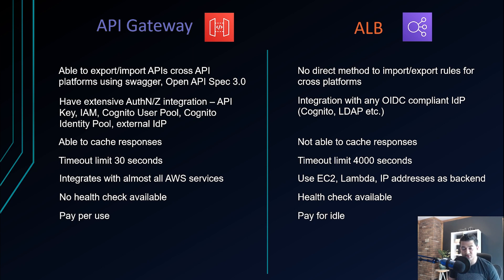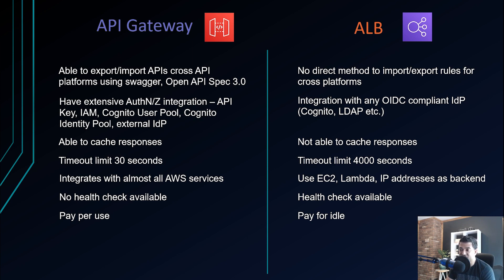API Gateway is serverless and pay-per-use — if there is no API traffic, you pay nothing unless caching is enabled. ALB is like EC2: there is an underlying EC2 instance running to serve your load balancer, so you pay a charge even when it is idle. This makes pricing more complex to compare.